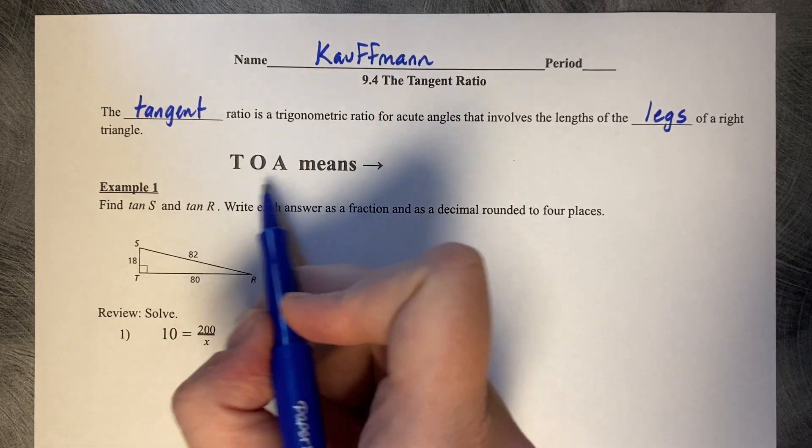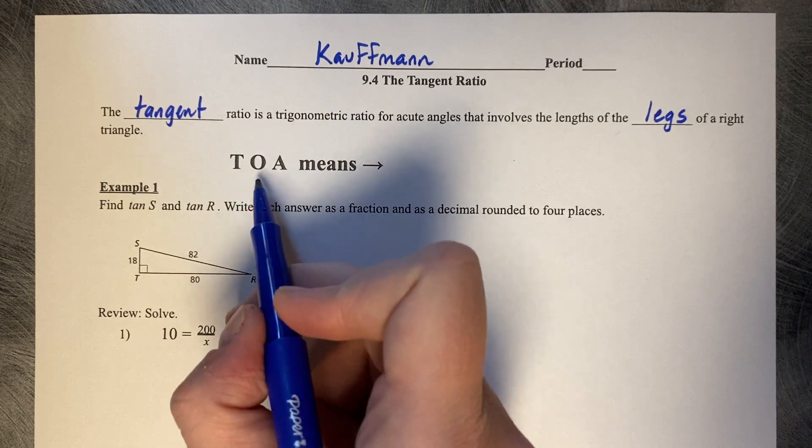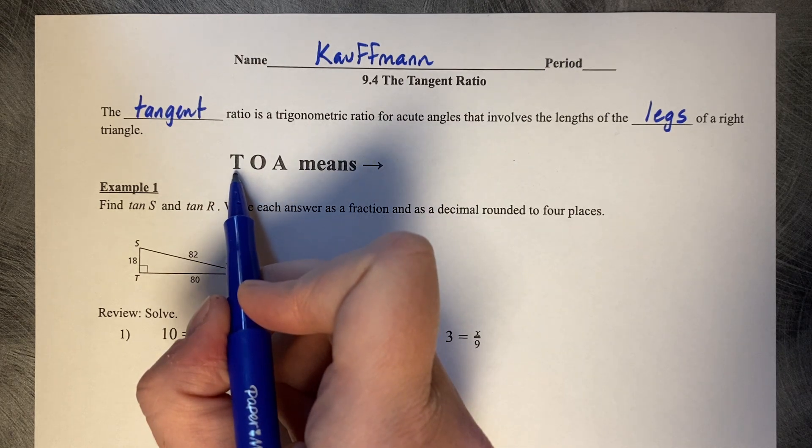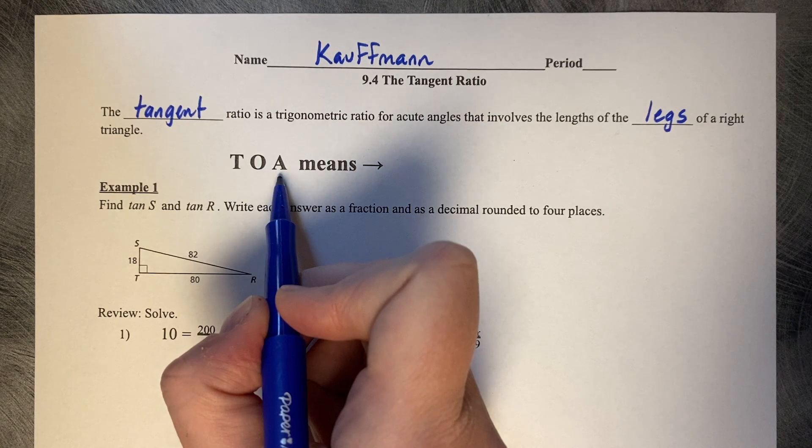TOA. If you recall from last class, introduction to trigonometry, TOA stands for tangent, and the O stands for opposite, and the A stands for adjacent.